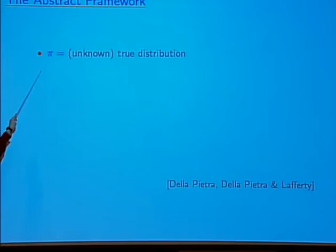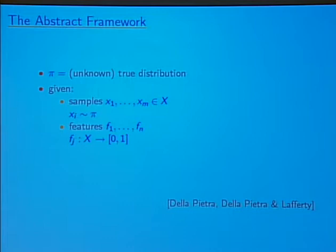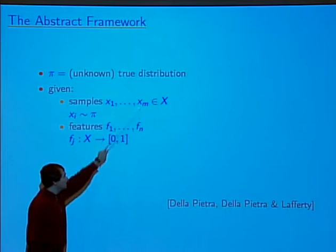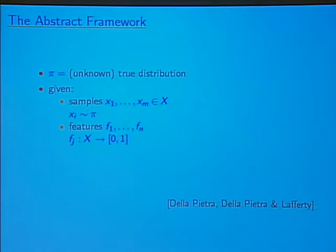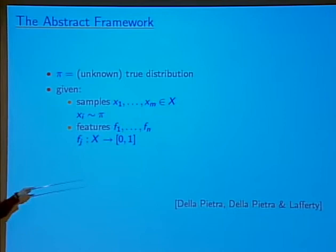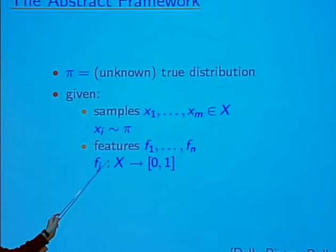Here more abstractly is the framework. Pi is the true unknown distribution. We're given a set of samples — the samples are coming from this distribution pi. Each sample is xi, there are m of them, and they all come from some space capital X. Pi is a distribution on X and we get m iid samples from that distribution. We're also given a set of n features, each of which is a real-valued function on the space X.